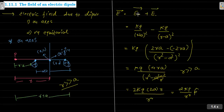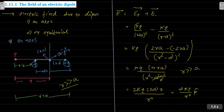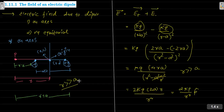The electric field due to the positive charge at P is kQ/(R-a)², and due to the negative charge it is kQ/(R+a)². Taking KQ as common outside, we take the LCM and simplify to get 2R in the numerator, giving a denominator of (R²-a²)². When R is very much greater than a, we can neglect a compared to R.